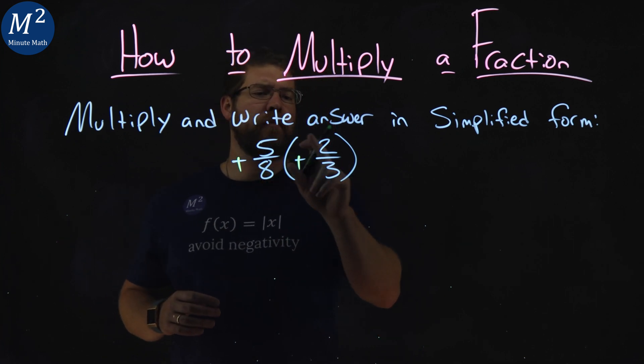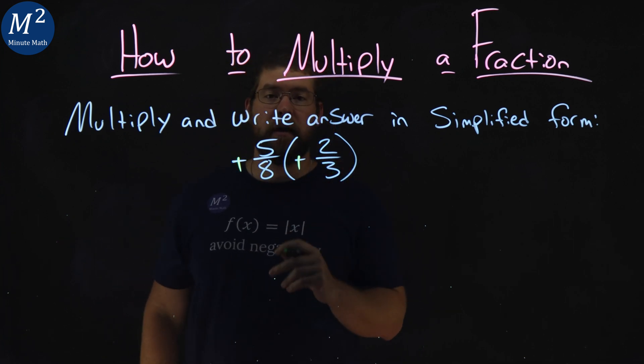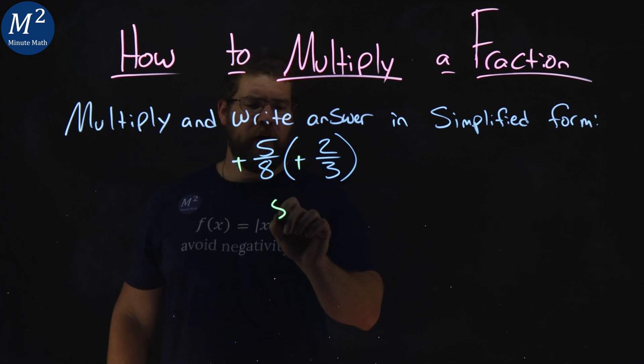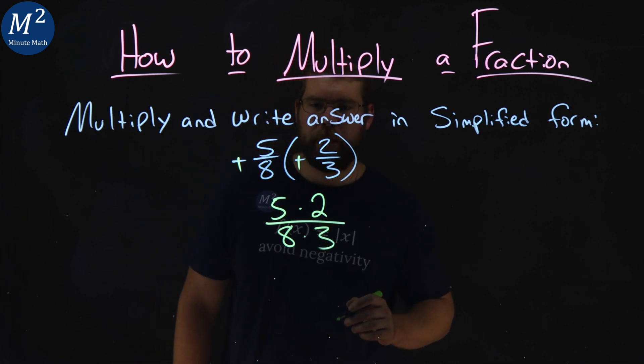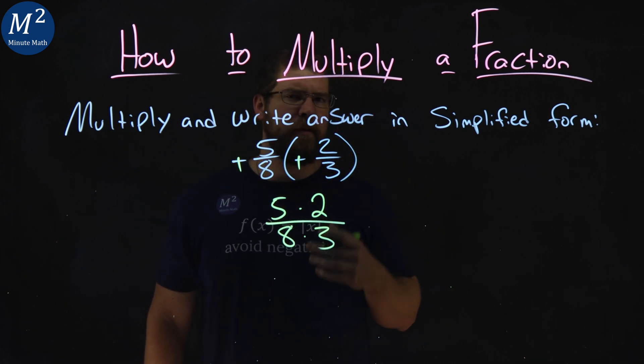Now, we want to multiply across the numerator and across the denominator. So we have 5 times 2 over 8 times 3. Remember, parentheses means multiplication.